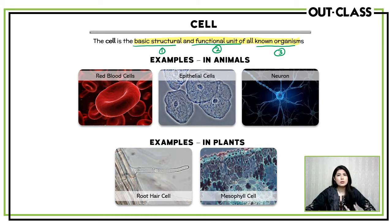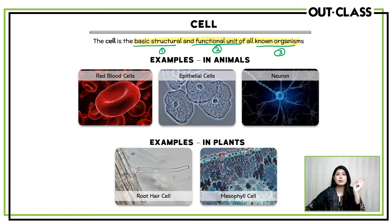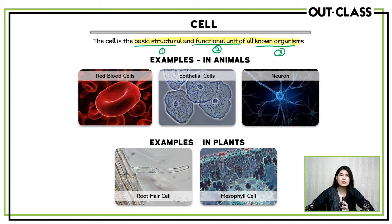If you play with Legos or blocks, you know that towers, houses and buildings — all are made from that single basic block of Lego. Just like that single block of Lego, your cell is the primary unit, the basic unit of your body. We have examples in animals and plants to give you clarity of what the cell is.